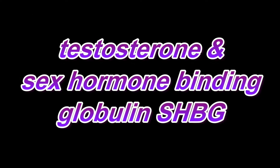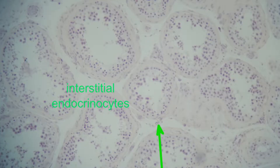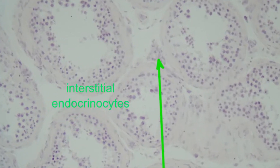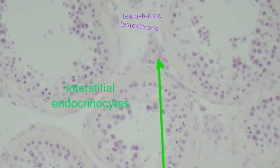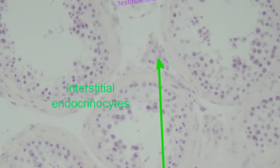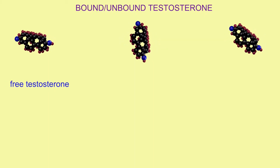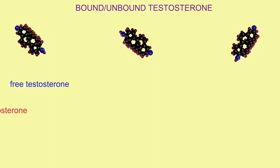One could perform a blood test and get a measure of the total level of testosterone present in someone's plasma. But the testosterone which matters most is that which is readily available for use in tissues, which can diffuse into tissues and be used by cells. Only one to two percent of the total amount of testosterone is floating in blood plasma, because testosterone is nonpolar and doesn't dissolve well in water.